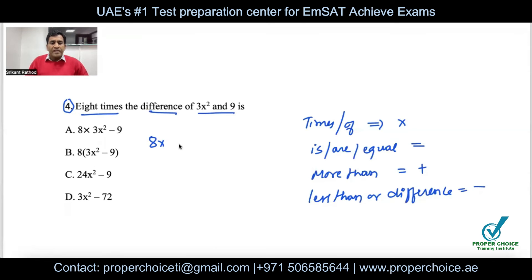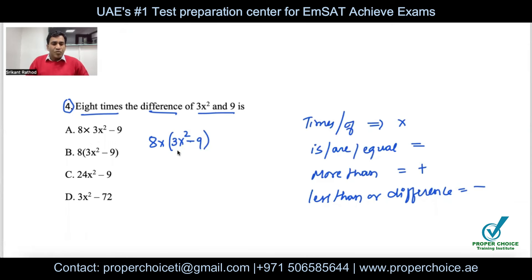This entire difference is being multiplied, so it must go in brackets. If you don't use a bracket, you would only be multiplying 8 by 3x², not the full expression. So the expression is 8 × (3x² − 9).